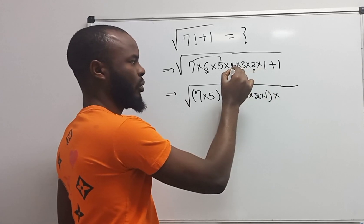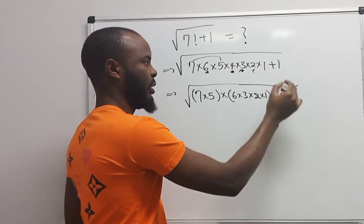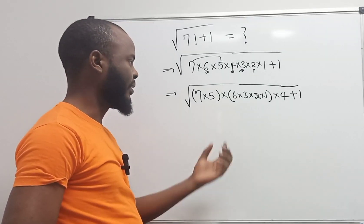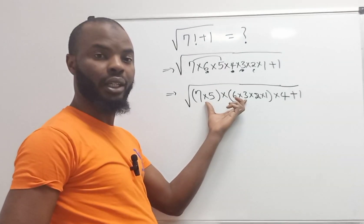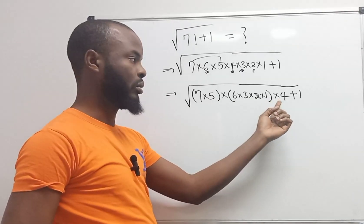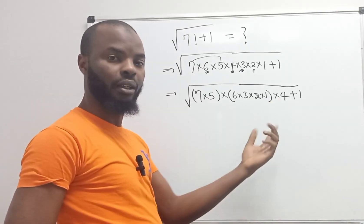What I just tried to do here is rewriting my 7 factorial by having 7 times 5 and having 6 times 3 times 2 times 1. Yeah, this is my 4. Why do I do this? I'm going to explain later.